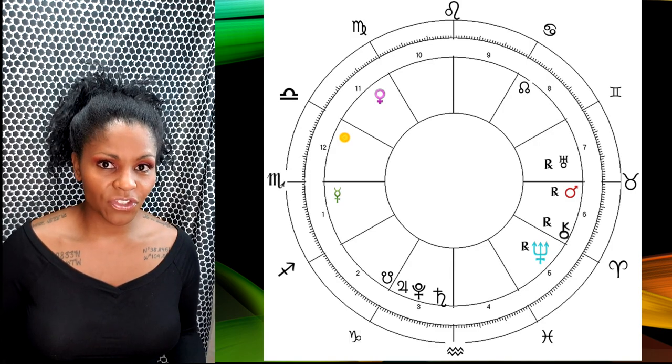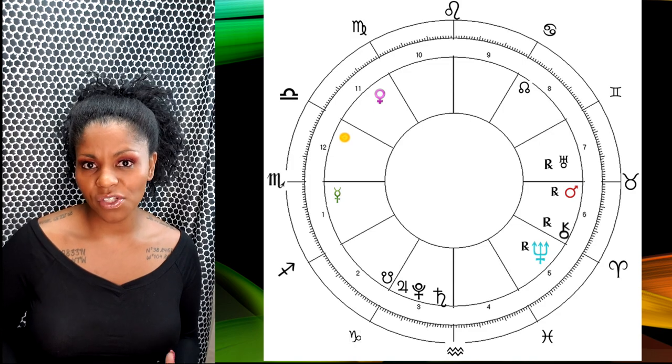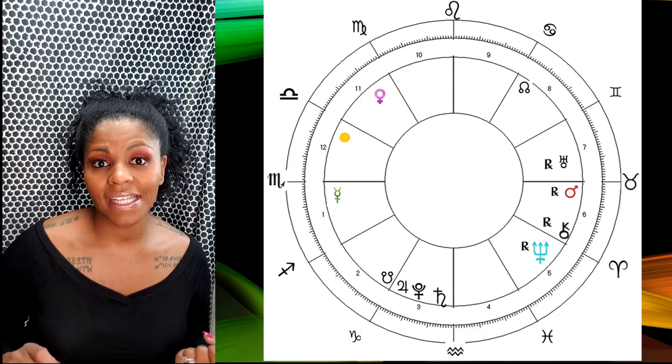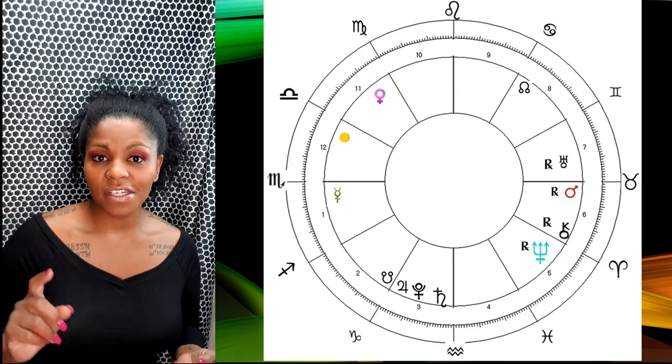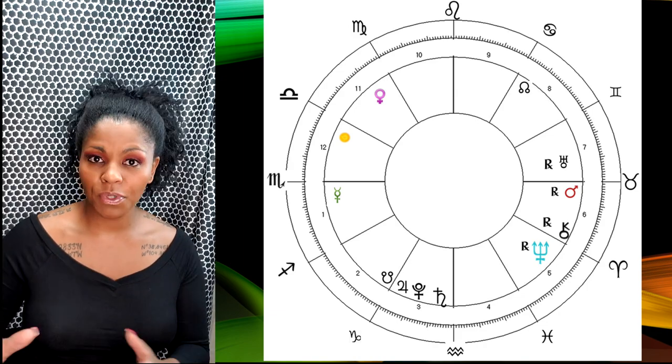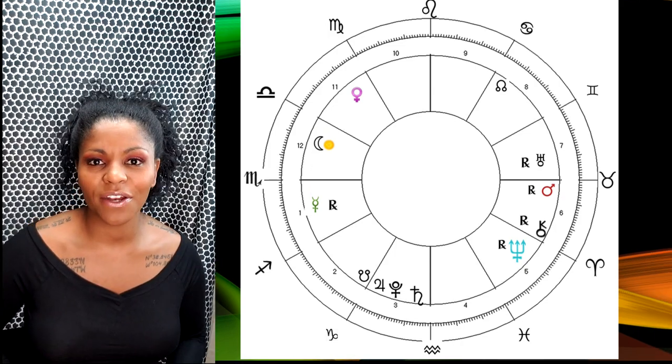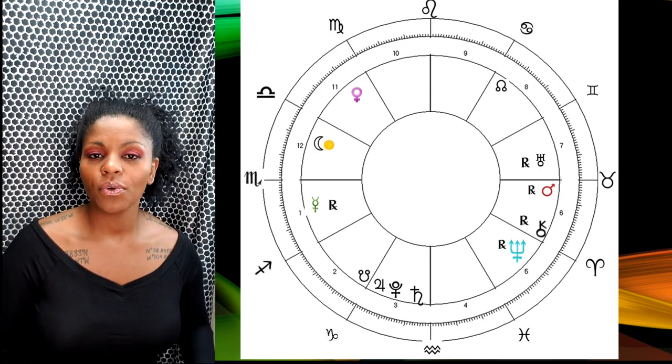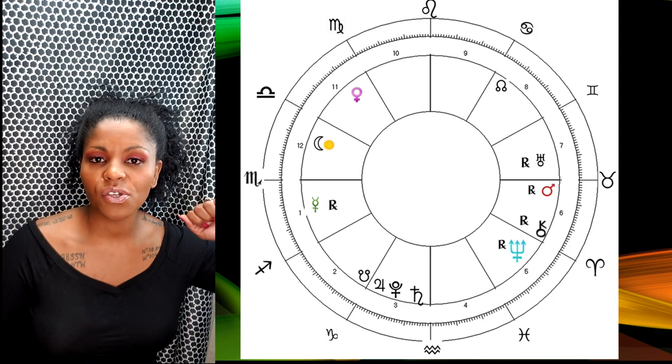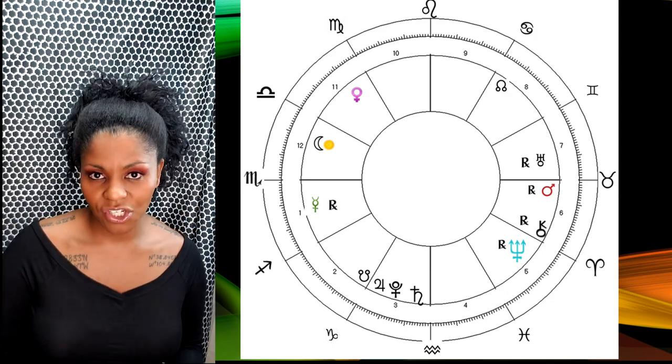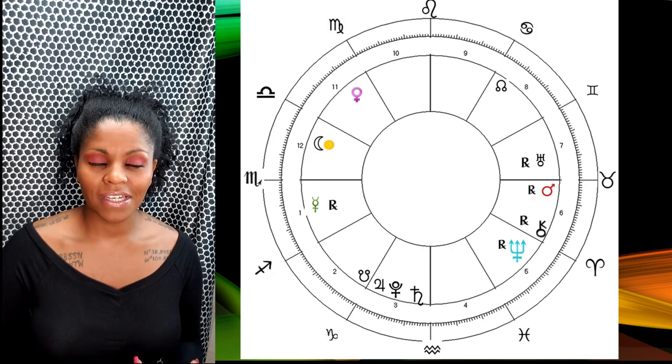If you do have contracts that need to be renegotiated, this Pluto direct will help you to be able to do that as well. On the 16th we've got a new moon happening in the energy of Libra at 24 degrees, so this is right back up over here into the 12th house. A new moon—we want to plant these seeds of intention. What do you want to blossom out next?